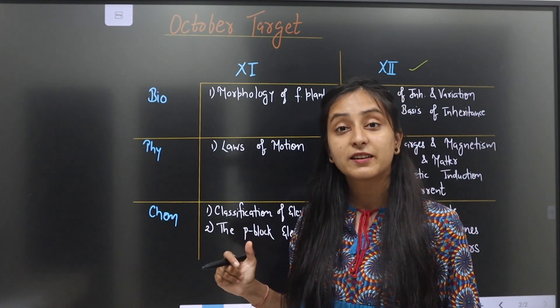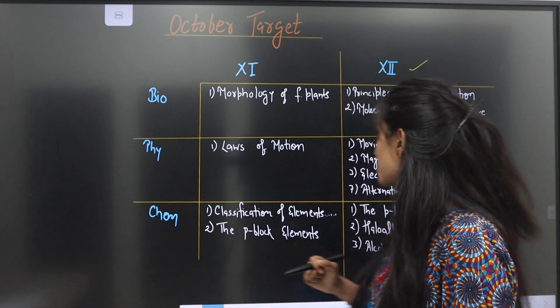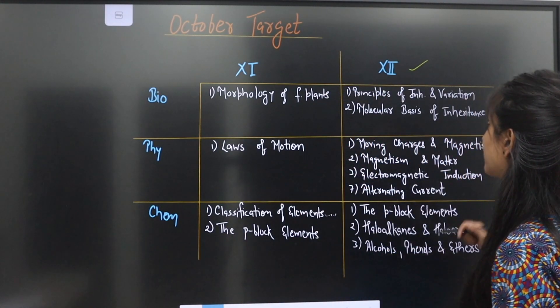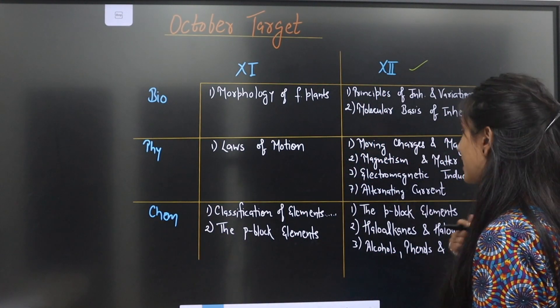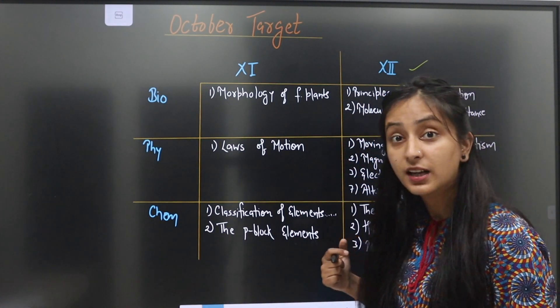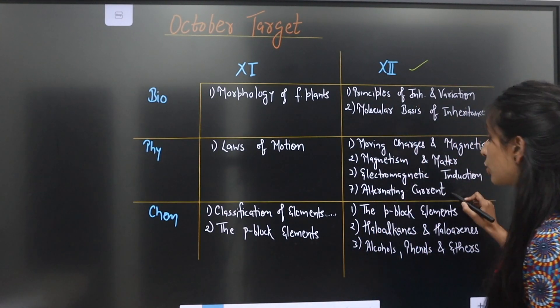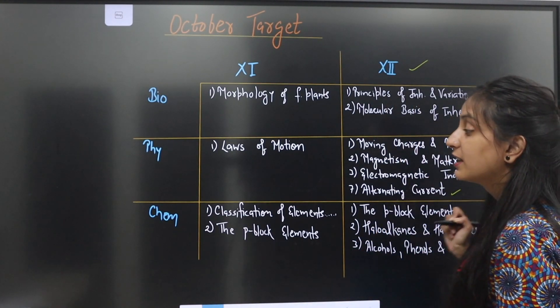Physics Class 11 — Laws of Motion. Class 12 Physics — Moving Charges and Magnetism, Magnetism and Matter, Electromagnetic Induction, and Alternating Current.